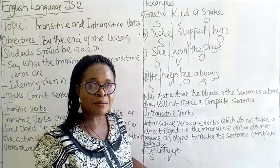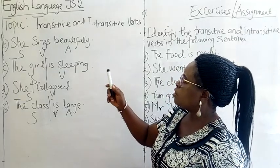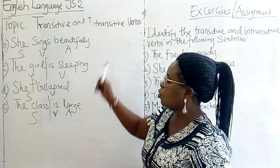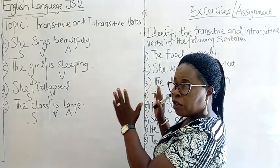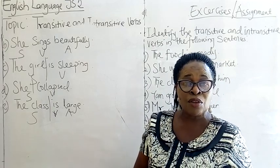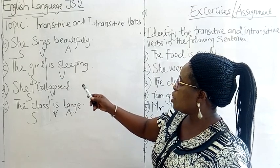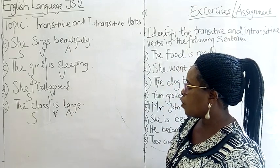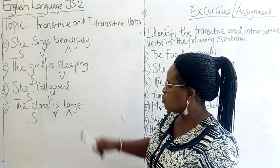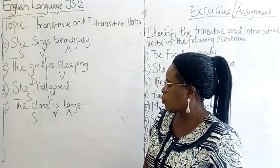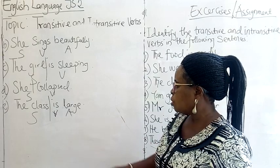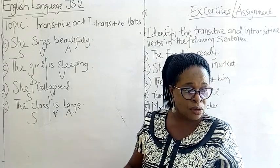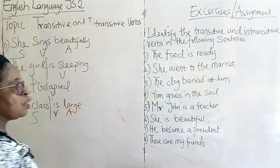For example: Jesus wept. She sings beautifully — we have subject, verb, and adjunct. Adjunct refers to other things that are in the predicate aspect of the sentence. The girl is sleeping — we have subject and verb. She cries — we have subject and verb. The class is large — we have subject, verb, and adjunct. As I told you, adjuncts are other things added after the subject and verb.